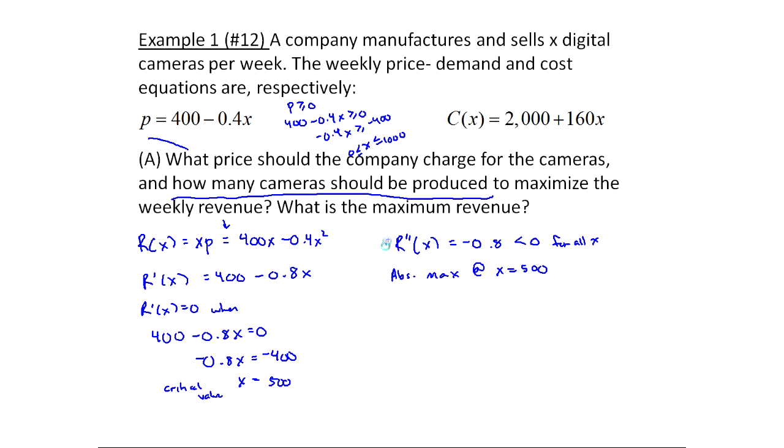Okay, now the next question is, what's the maximum revenue? Well, the max revenue will be what we get when we plug this in. So that'd be r of 500. In other words, it's 400 times 500 minus 0.4 times 500 squared, which is 100,000. And remember, this is in dollars, so $100,000.